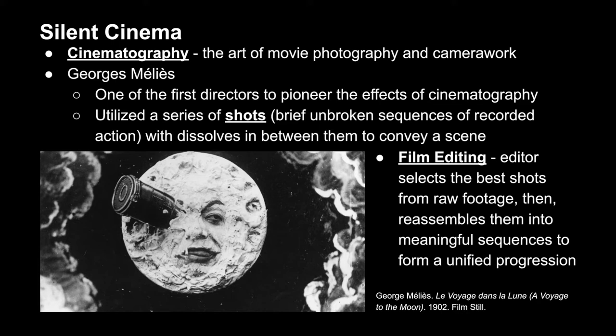As cinema became more accepted as an art form, its artistic direction and camera work became known as cinematography. One of the first directors to pioneer cinematography was Georges Méliès. He used what would later be called practical effects to achieve the seemingly impossible, and also used a series of shots — brief unbroken sequences of recorded action — with interesting dissolves in between to convey a singular scene. Like most filmmakers, he also utilized film editing, where the editor selects the best shots from raw footage and reassembles them into a unified production with more contextual meaning.